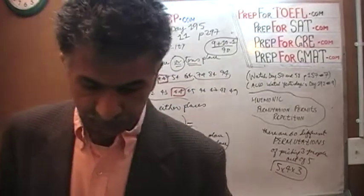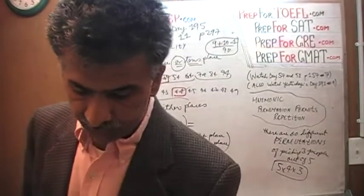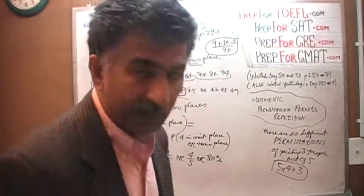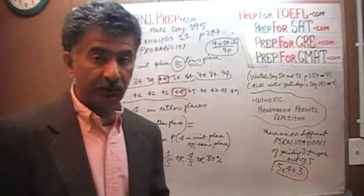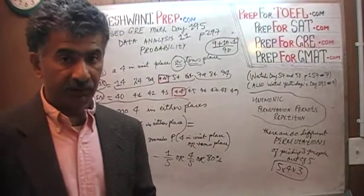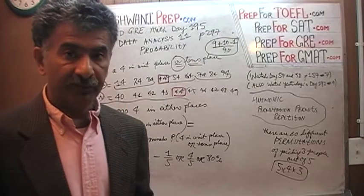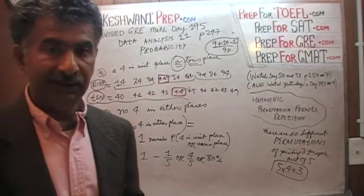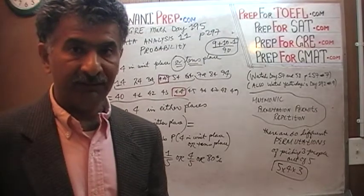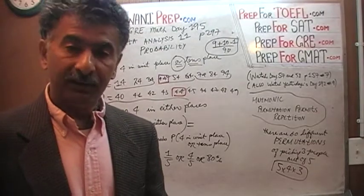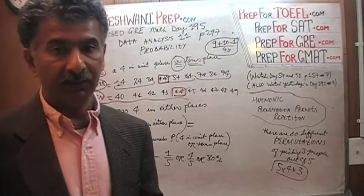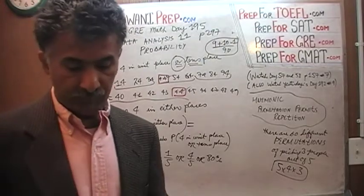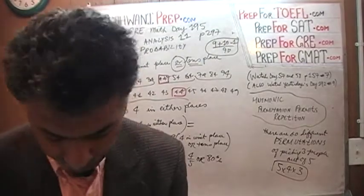If there's a twenty percent chance that the number you pick at random will have four in a unit place or tens place, then it stands to reason that there must also be an eighty percent chance that it will not have four in either place. That's all there is.